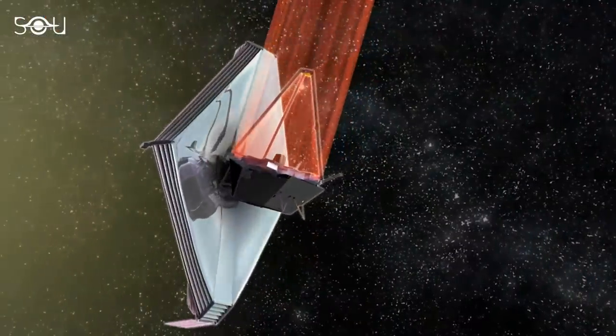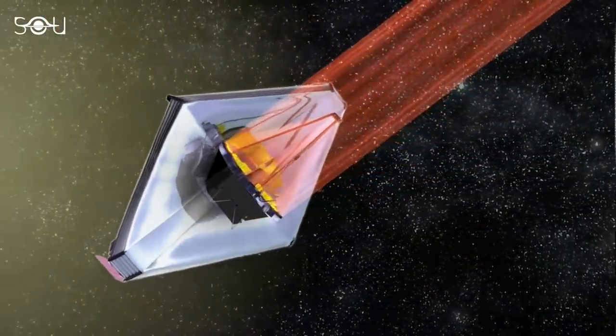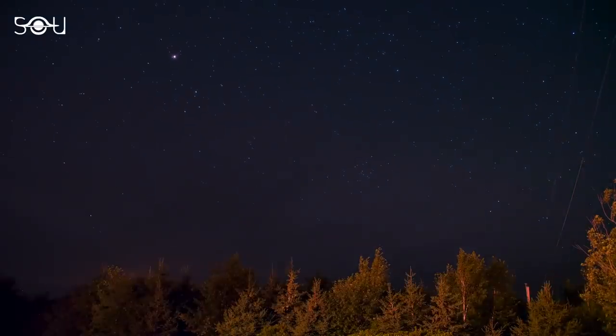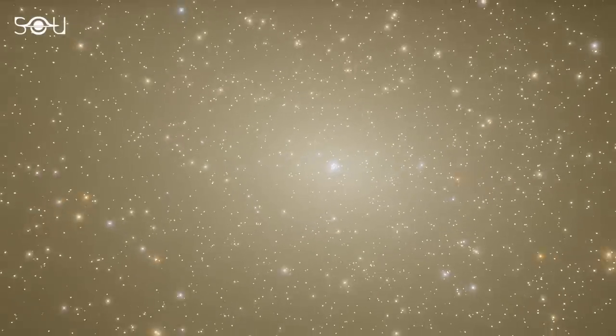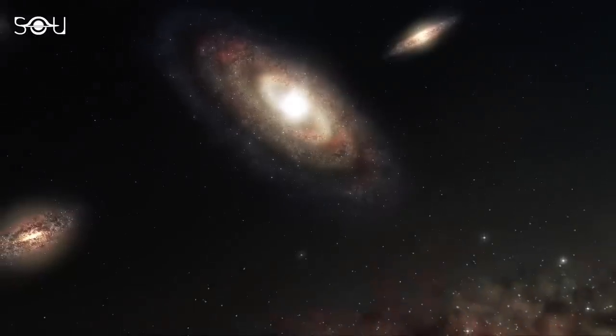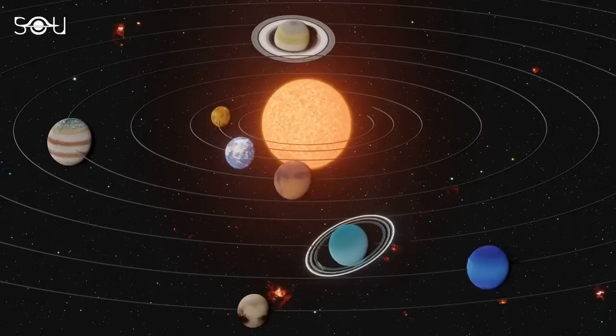When data from the James Webb Space Telescope's early science program were released, hundreds of research papers were submitted for publication within weeks. Most papers were on stellar astrophysics, extragalactic astronomy, exoplanets, dark matter, and the solar system.